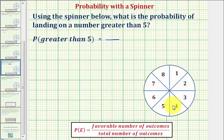Notice how we have eight equal sized sections numbered from one through eight, and therefore the total number of outcomes is eight.